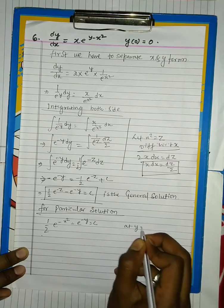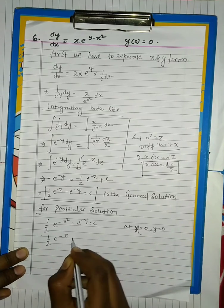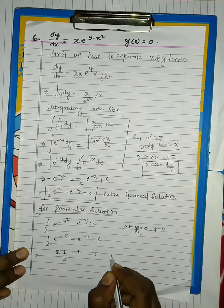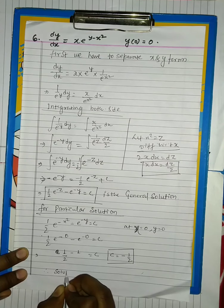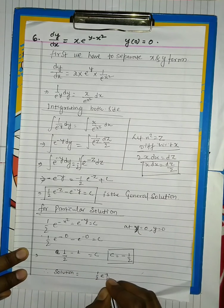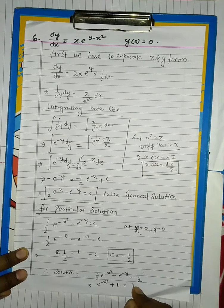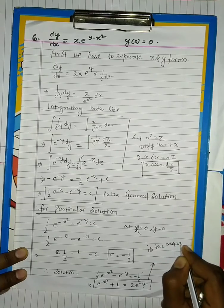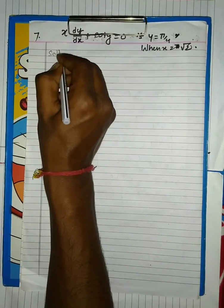For finding the particular solution, we have to see the given conditions. We have to find the value of c and put the value of c in the general equation. So we get the particular solution of any differential equation.